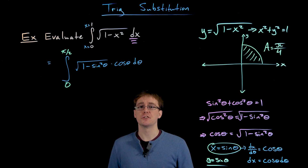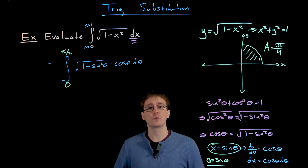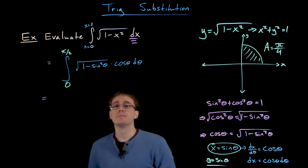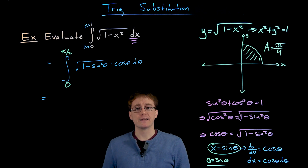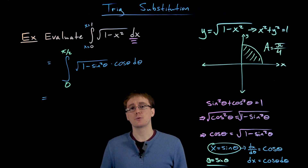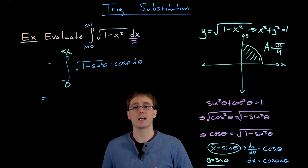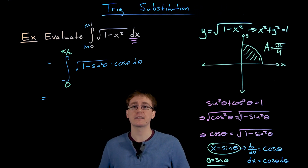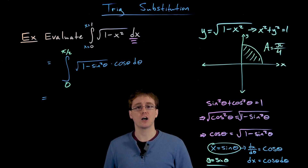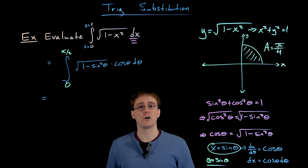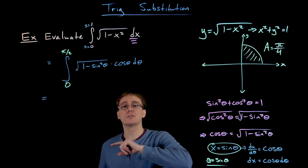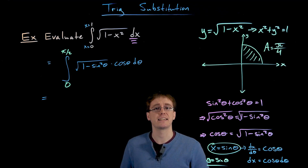We have finished expressing our integral in terms of the new variable theta, and now we need to evaluate it. Before finding the antiderivative, we need to do a little more rewriting. The square root of 1 minus sine squared appearing in our integral is the same as cosine of theta — that's actually the whole point of this trigonometric substitution. After we make the substitution, 1 minus sine squared becomes cosine squared, and the square root of cosine squared is just cosine, canceling the square root.